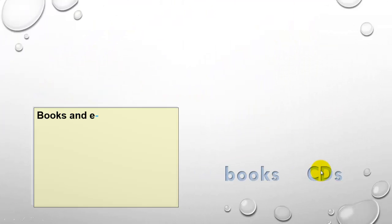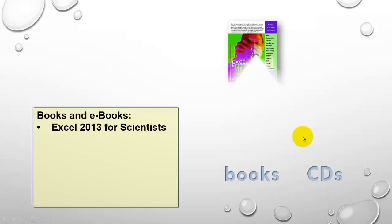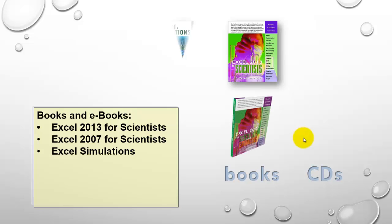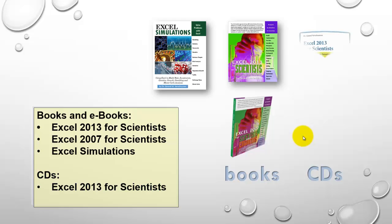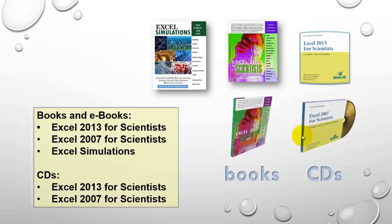I would refer you to the books and CDs I created on these issues. There is the Excel 2013 for Scientists book, and an older version, Excel 2007 for Scientists. I also discussed this issue briefly in my new book Excel Simulations, since it's basically a simulation — I simulated random values as if they were used in a sample. The CDs for Excel for Scientists, 2013 or 2007, have more than 1,500 slides, are very interactive, ask you questions, and let you test yourself.